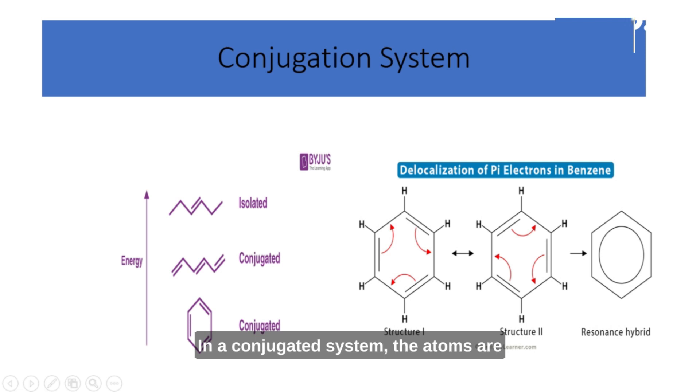Think of the electrons in a molecule as little particles that are responsible for bonding and interacting with other molecules. In a conjugated system, the atoms are arranged in a way that creates a pathway for these electrons to travel along. It's like a road or a bridge that connects different parts of the molecule. This pathway allows the electrons to spread out and be shared among multiple atoms instead of being stuck in one place. This sharing of electrons makes the molecule more stable and changes its properties.